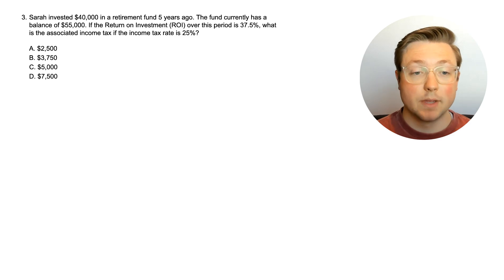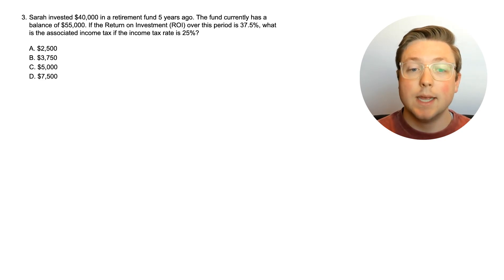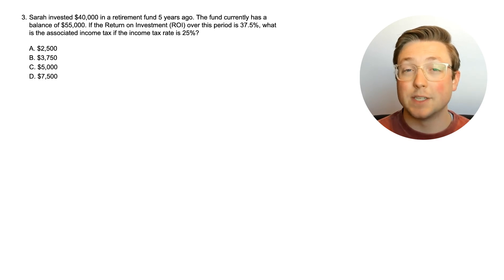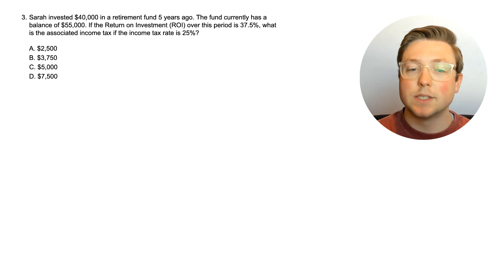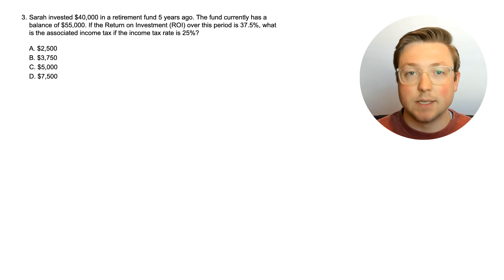Here is question 3. Sarah invested $40,000 in a retirement fund 5 years ago. The fund currently has a balance of $55,000. If the return on investment, or ROI, over this period is 37.5%, what is the associated income tax if the income tax rate is 25%? This one is a little bit different — it's giving us the ROI right up front, and we need to figure out how much the income tax is.